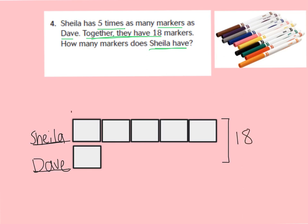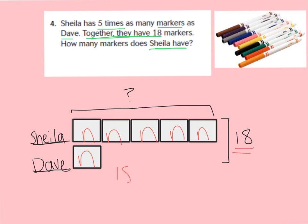Now we need to find out Sheila's number. In order to find the unknown number that goes in the boxes, remember — if we don't know the number, we represent it with the letter N. Let's go ahead and put the letter N in each box. Now we can create an equation. We have 18 equals... let's count how many boxes we have — 1, 2, 3, 4, 5, and 6. So we have 6 times N.